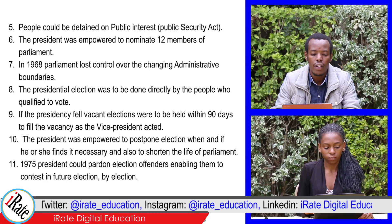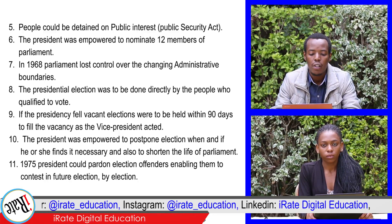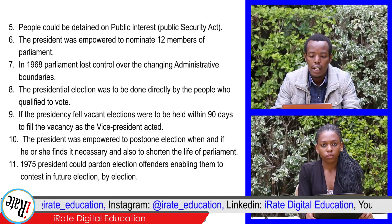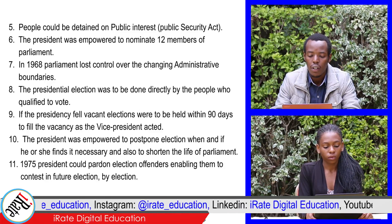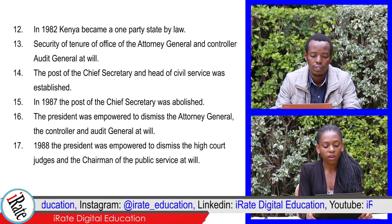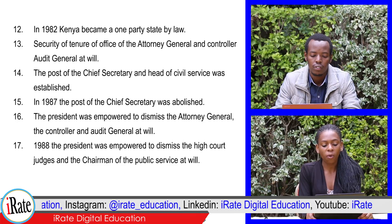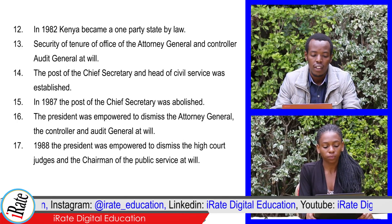11. In 1975, the President could pardon election offenders, enabling them to contest in future elections. 12. In 1982, Kenya became a one-party state by law.